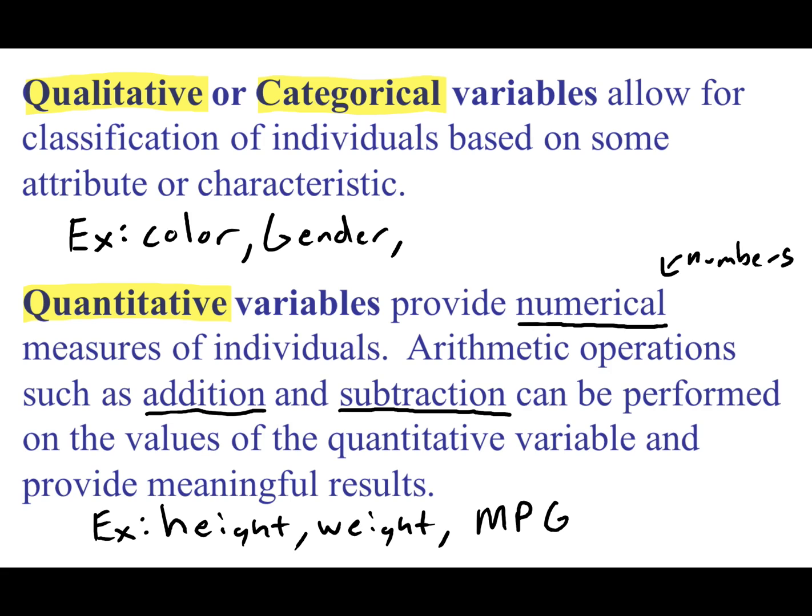But interestingly enough, say something like your zip code. Well, that's a number, right? So you think, okay, is that a quantitative variable? Well, no, because you can't perform arithmetic operations on it and have that be meaningful.